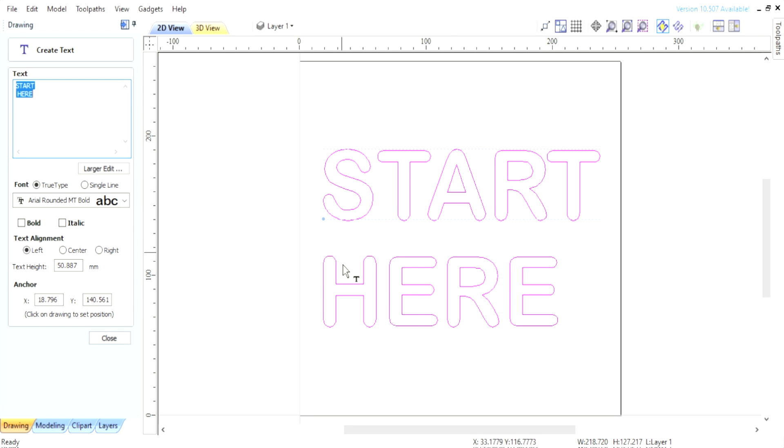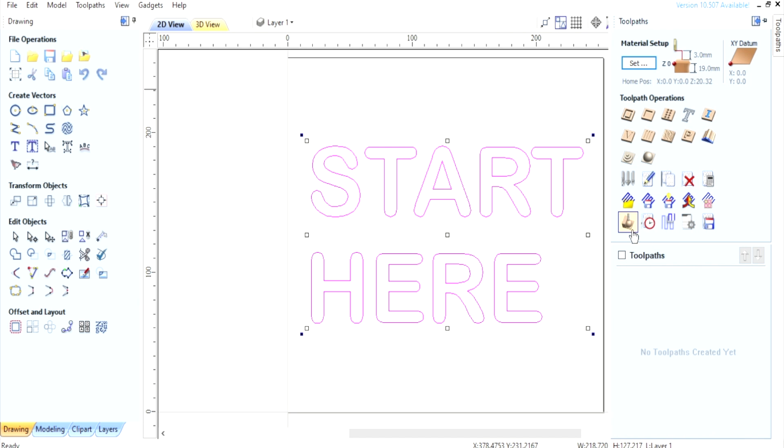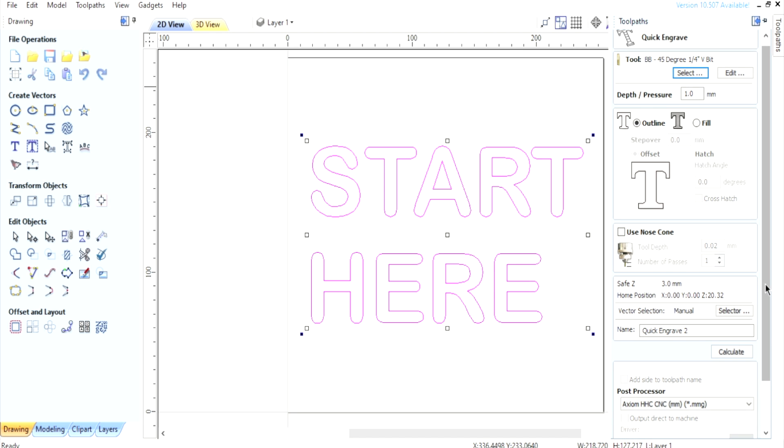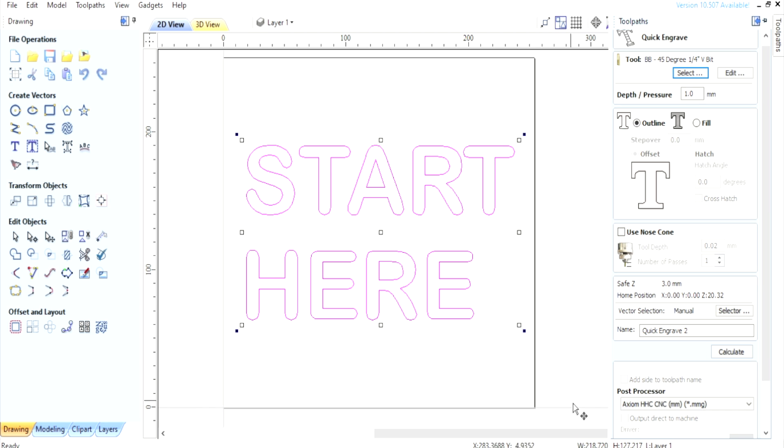So I've got my text that I want to cut out - says "start here". This is how we're going to begin. What do we do now that we have the letters? We want to tell this software what we want the machine to do. We're going to come over here to toolpaths - there's lots of different options. The video is for this one, which is a quick engraving toolpath. I'm going to click on that. It already has my bit selected, which is fine, but this is where you would go to determine which bit you need. We're using a 45 degree quarter inch V-bit from Bits and Bits. The depth that we would like to go, we're going to keep that at one millimeter. We are going to run this on the outline of these lines.